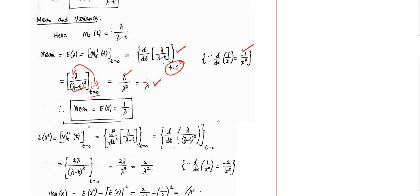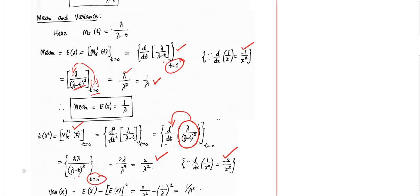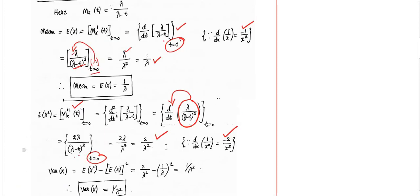To determine variance, we need E[X²] = M_X''(t) at t = 0. We differentiate the MGF twice. The first differentiation gives λ/(λ − t)². Differentiating again with respect to t gives 2λ/(λ − t)³, since the differentiation of 1/x² is −2/x³. Applying t = 0 gives 2/λ². Therefore, variance of X = E[X²] − (E[X])² = 2/λ² − (1/λ)² = 1/λ².